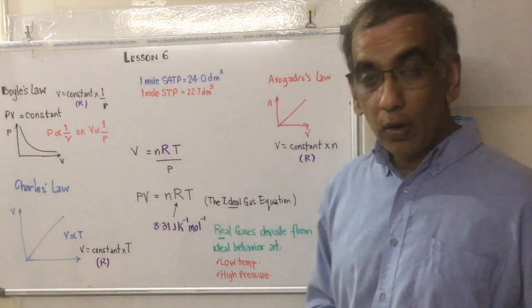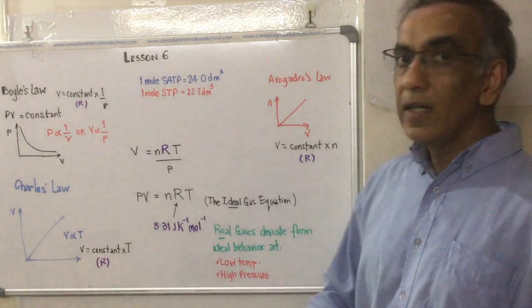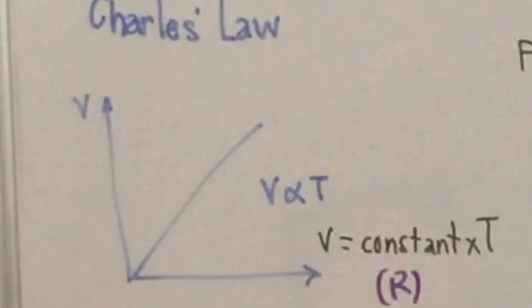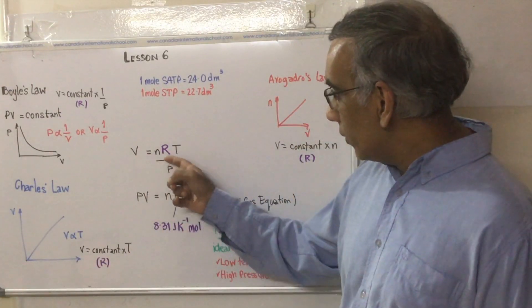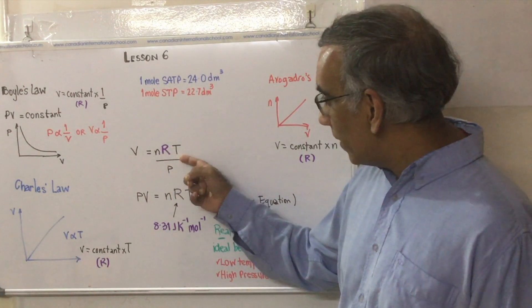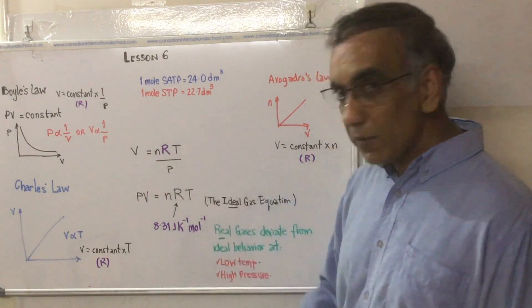Then we have another law, Charles law, which says that the volume of a gas is directly related to its temperature if you keep pressure constant. V directly proportional to T. V is equal to some constant, which we're going to call R multiplied by T. So V equals again to that constant R multiplied by T. It's part of this expression.